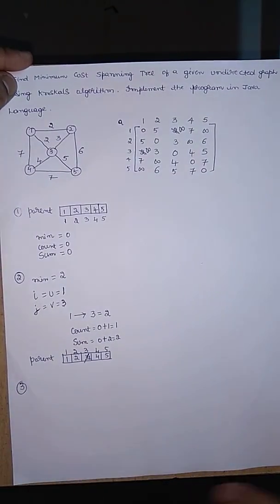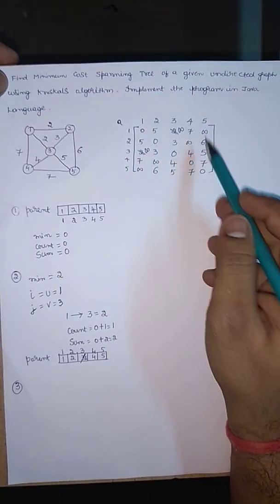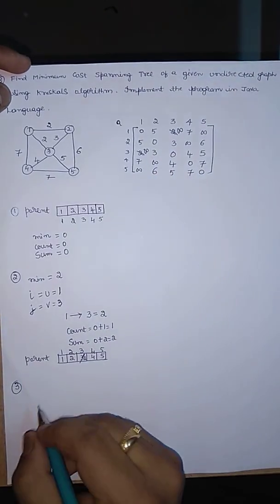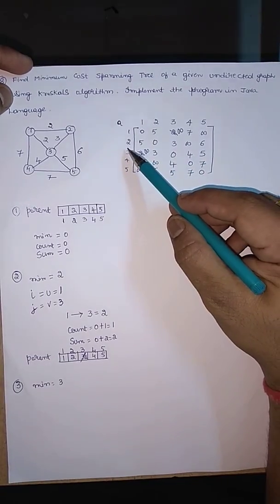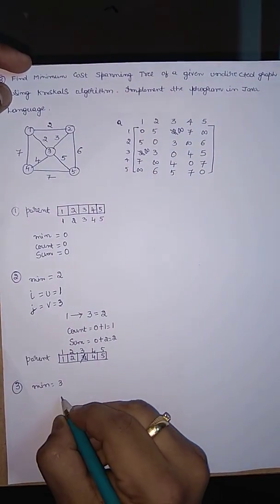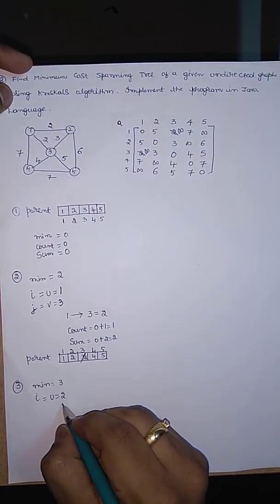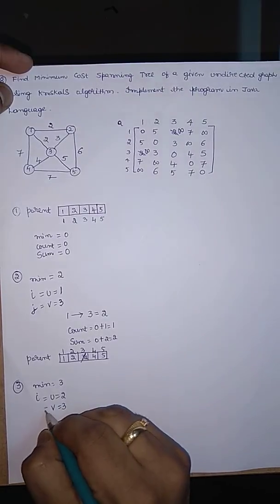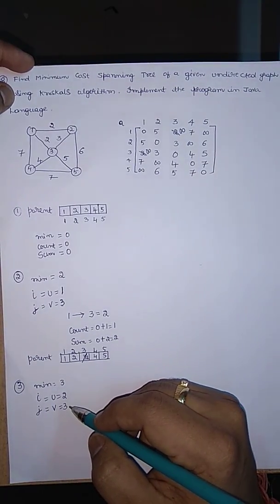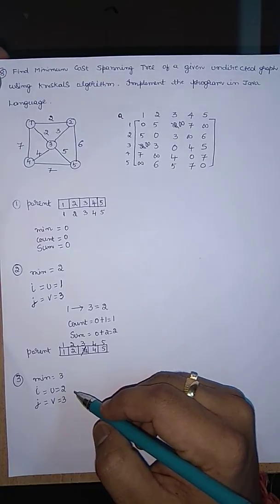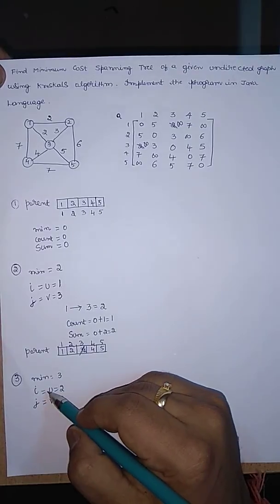Step 3: take the next minimum value except 0. The next minimum value is 3. Initialize that 3 inside variable min. The edge giving 3 is edge from 2 to 3. Initialize 2 inside u (and i), and 3 inside v (and j). Should we consider this edge? We need to check two conditions: whether to update i and j values.